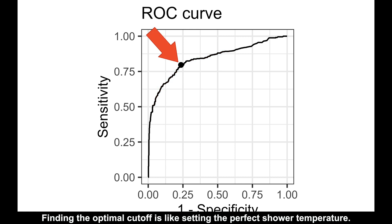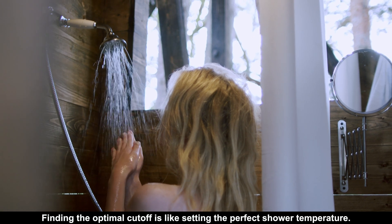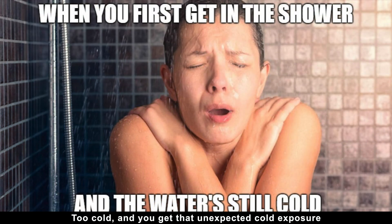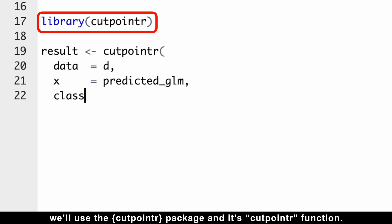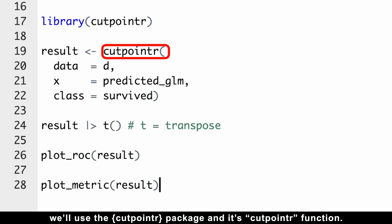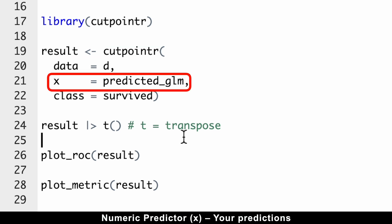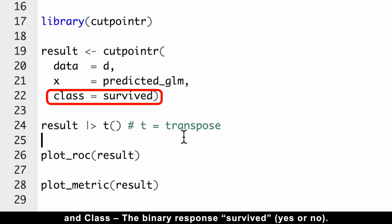Finding the optimal cutoff is like setting the perfect shower temperature. Too hot and you burn yourself. Too cold and you get that unexpected cold exposure you've been avoiding. To find our first optimal cutoff, we'll use the cutpointr package and its cutpointr function. It only needs three simple arguments: data, your dataset; numeric predictor, your predictions; and class, the binary response survived, yes or no.